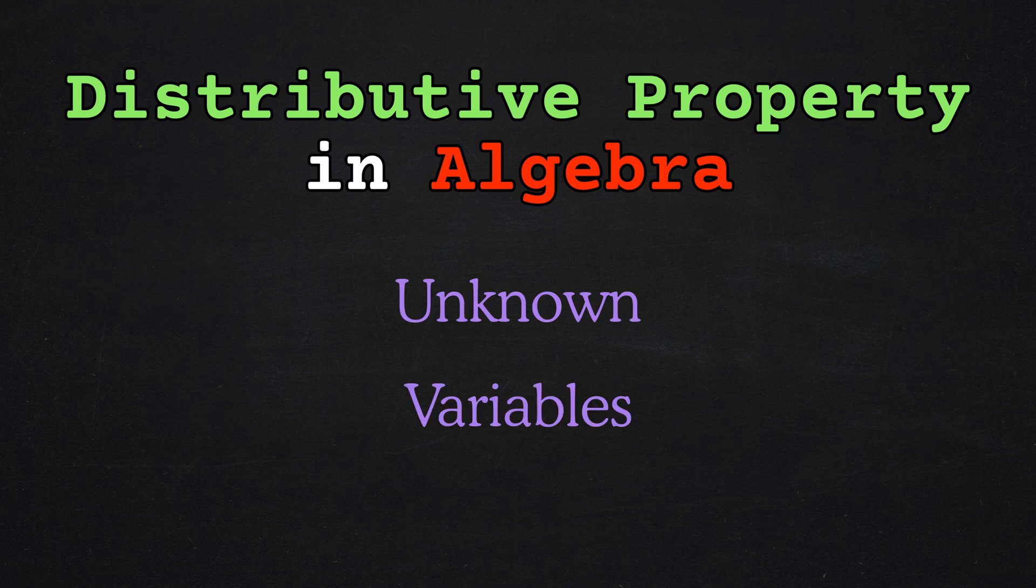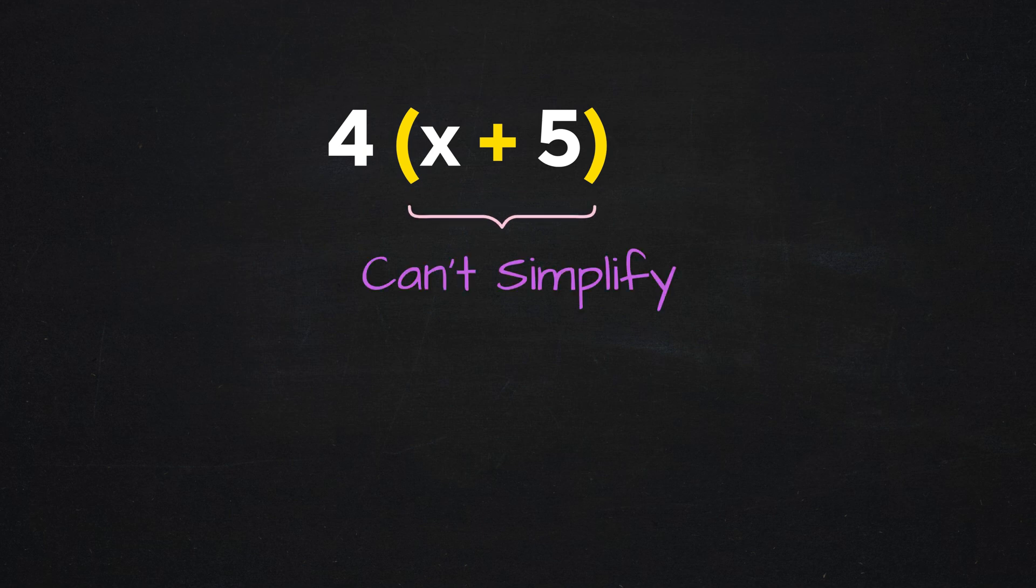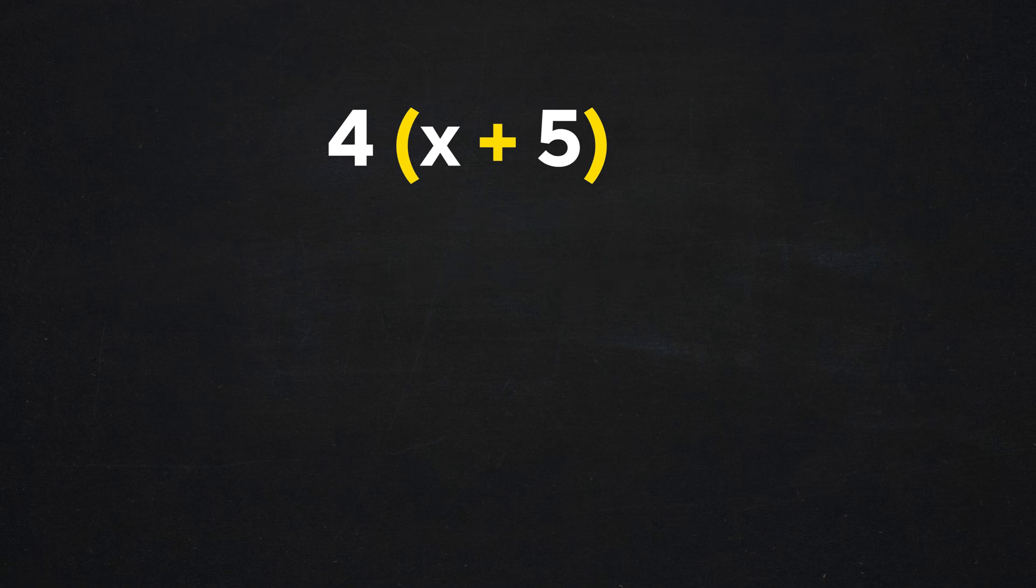Take this expression as an example: 4 times the sum of x plus 5. In this case, we don't know the value of x. It could be anything. Maybe 2 or maybe a completely different number. Since we don't know the value of x, we can't simplify the expression by combining the terms inside the parentheses. Our only options are to either leave the expression as is, or use the distributive property to break the group apart.